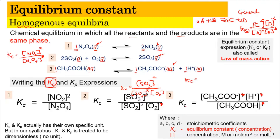In Kc, the K refers to the equilibrium constant and C refers to concentration. The brackets denote concentration, which can be expressed in units of mol/dm³ or mol/L. As a note, although Kc and Kp technically have their own units, in our syllabus Kc and Kp are treated as dimensionless, or having no unit.